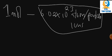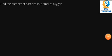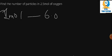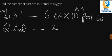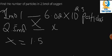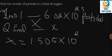We need to take into consideration Avogadro's constant number. So the question says: find the number of particles in 2.5 moles of oxygen. We know that one mole of an element has approximately 6.02 times 10 to the power 23 particles. If we have 2.5 moles, we cross multiply and punch it into the calculator to get 1.505 times 10 to the power 24 particles.